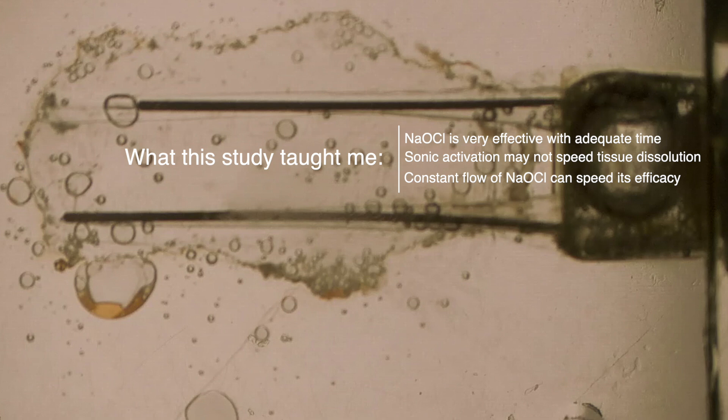Quite a few things. I confirmed that sodium hypochlorite is very effective with adequate time. I saw that standard 6% bleach will kill everything in there in 40 minutes regardless of how you do it. And that time is the number one factor in successful irrigation.